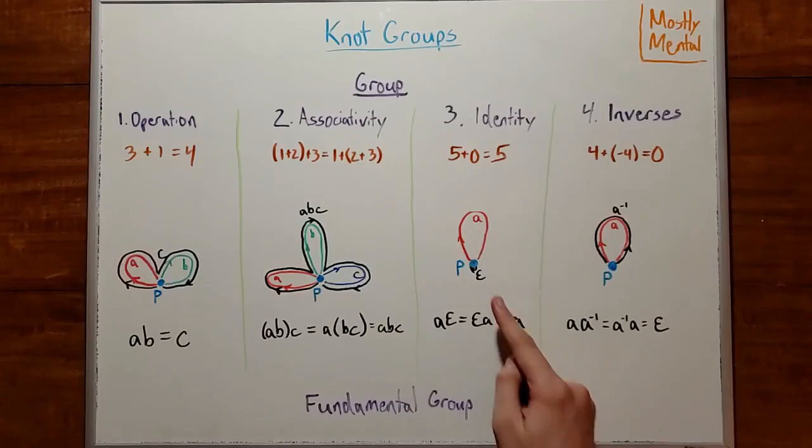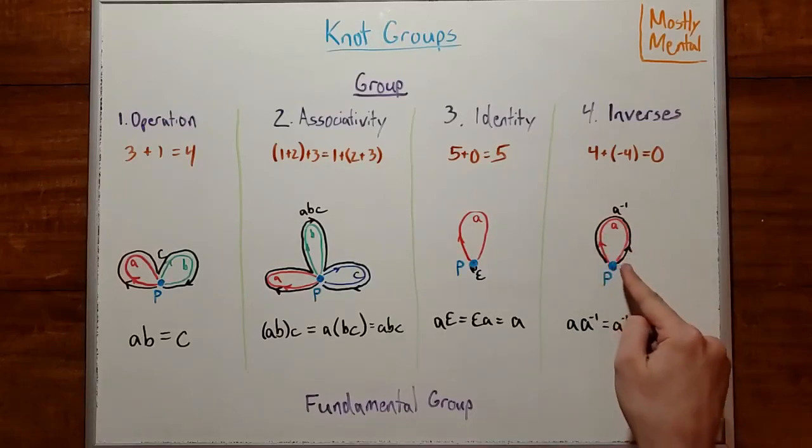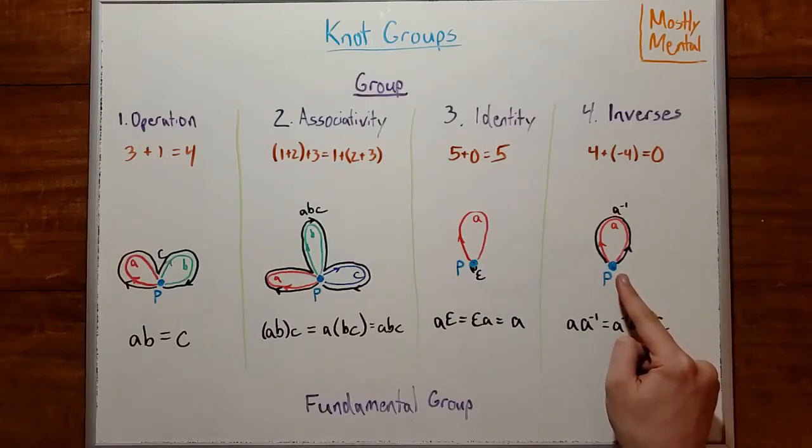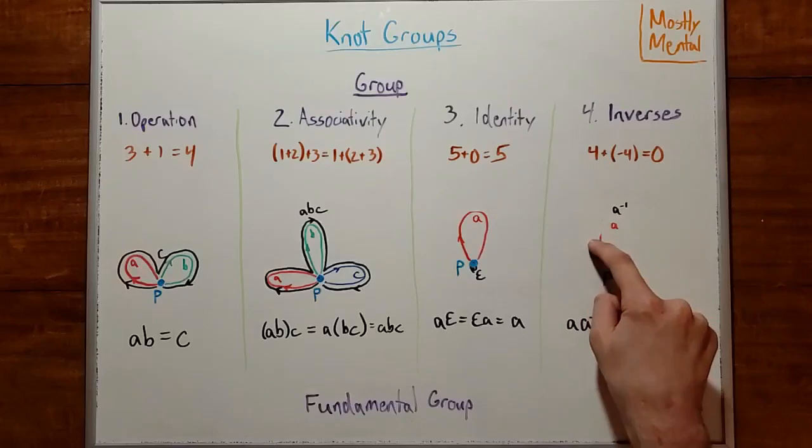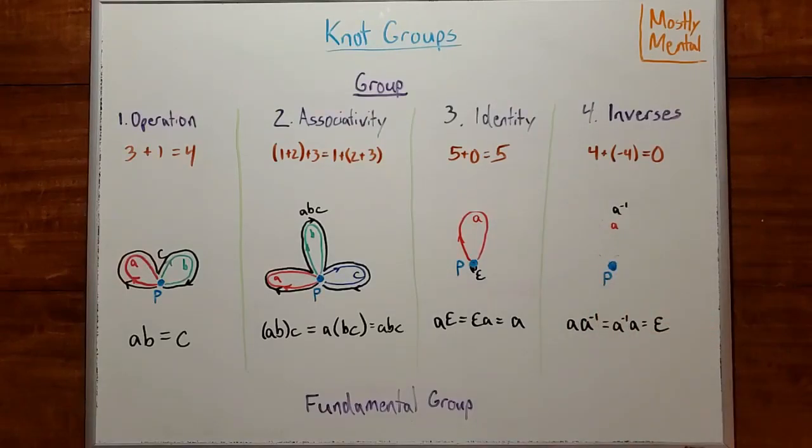And there's also a do-nothing path, where the duck just sits still in the pond all day. If we add that to any path, we don't change it, so we have an identity. And the inverse of a path is just walking it in the other direction. Notice that if we add the path to its inverse, we get a thin path, which we can then deform continuously by shortening it until we get back to a single point. So adding these together gives us the identity, and we have inverses. And putting all of this together, we get a group.